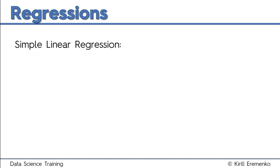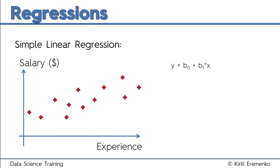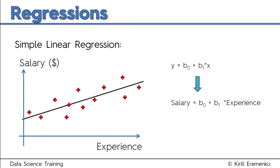Now let's look at the simple linear regression visually — it's pretty straightforward and easy to visualize. Here we have the y and x axis. Let's look at the specific example of experience and salary. Experience is our horizontal axis, salary is our vertical axis, and we want to understand how people's salary depends on their experience. In regression, we don't just come up with a theory — we look at the evidence, the hard facts. The regression formula becomes: salary equals b0 plus b1 times experience.